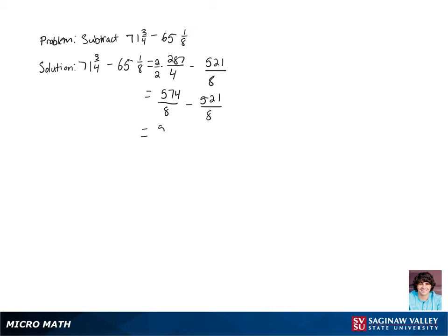Now once we carry out that subtraction, we are left with 53 over 8. Now to rewrite this as a mixed number, let's do long division. 8 goes into 53 six times, multiply 6 by 8 and we get 48, subtract that from 53, we get a remainder of 5.